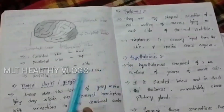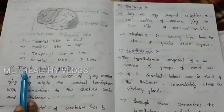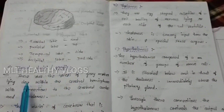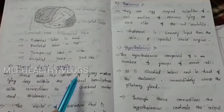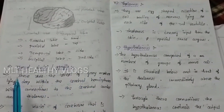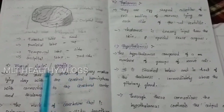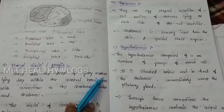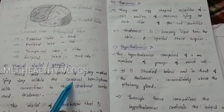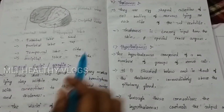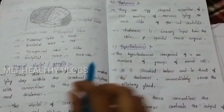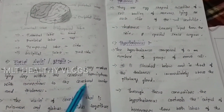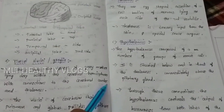The next part is the basal nuclei and ganglia. These are areas of grey matter lying deep within the cerebral hemisphere. This area is the central part of the cerebral cortex.